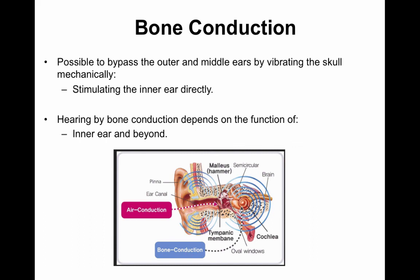Air conduction tests the whole system. Bone conduction tests just the cochlea and the auditory nerve. By testing both ways, we can figure out where the problem is — whether it's in the conductive portion, the outer ear and the middle ear, or the sensorineural portion, which is the inner ear and the auditory nerve.